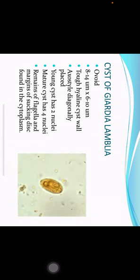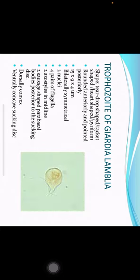Cyst of Giardia lamblia: ovoid in shape, 8 by 14 micrometers to 6 by 10 micrometers in dimension. A tough hyaline cyst wall is present. They have an axostyle which is diagonally placed. Young cysts have two nuclei while mature cysts have four nuclei. Remains of flagella and margins of the sucking disc are found in the cytoplasm.